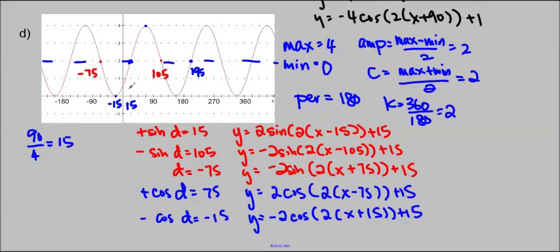And then I found the period was starting from the middle 15 to 195, so 195 minus 15 is 180, that gives me the period, and then we can just use our formulas for the rest, and figure out what the phase shift is, okay? So that's how you do it. Let's move on to E.